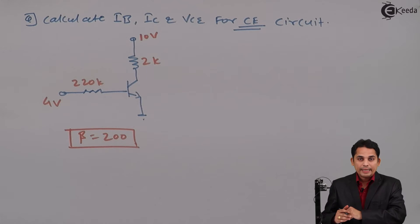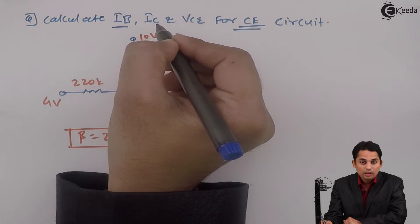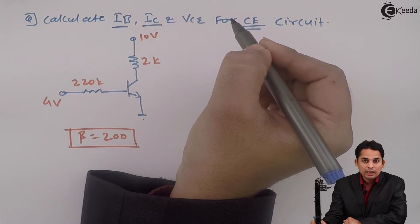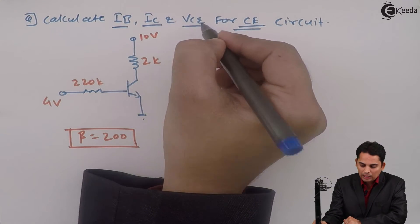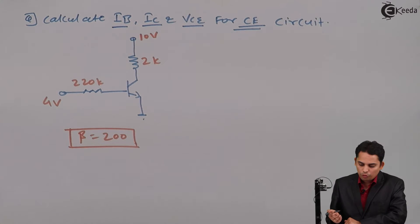Students, in the exam, they have asked you to find out base current IB, collector current IC, and voltage between collector to emitter VCE for the following circuit. Let's try.